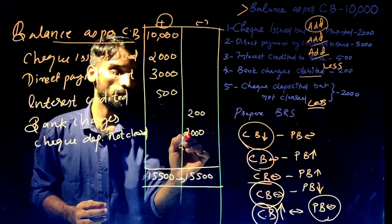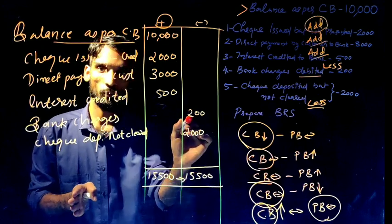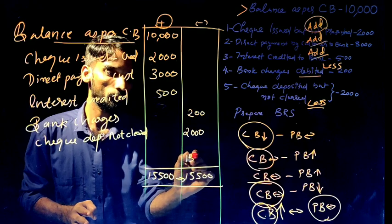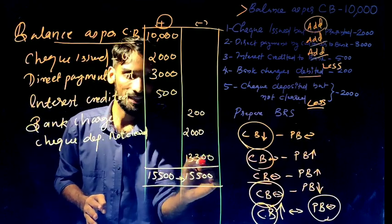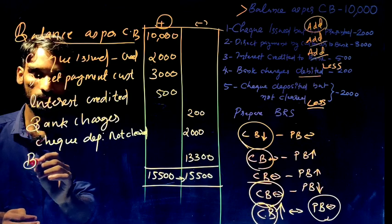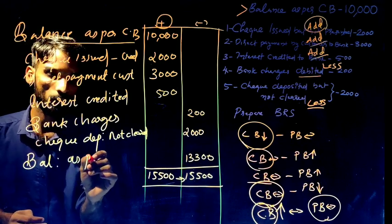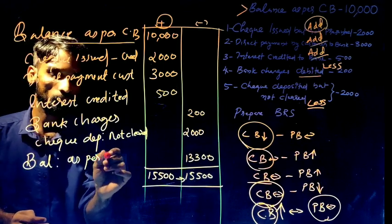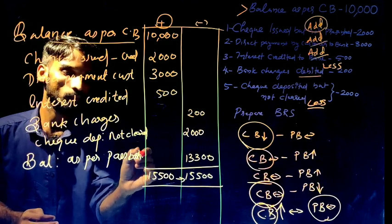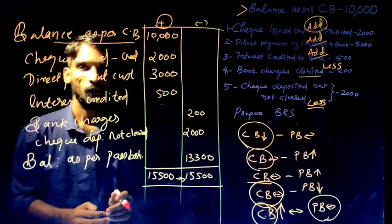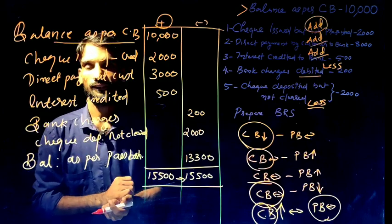After adding $1,350 and deducting $200, we arrive at $1,300. So this answer is the balance as per Pass Book. What is the problem that we have learned? Thank you.